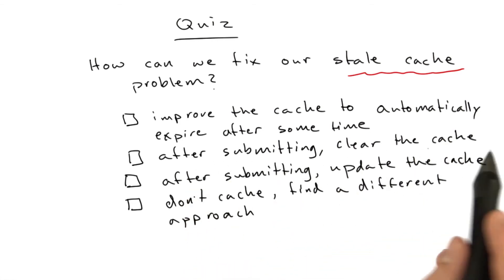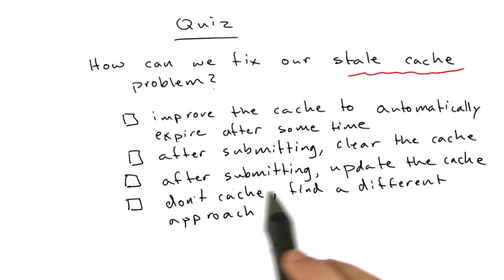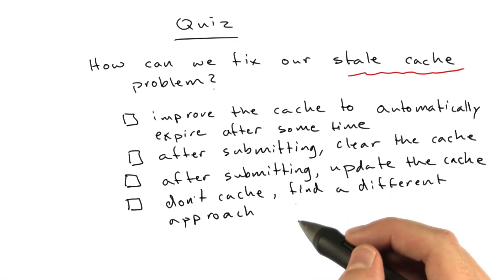Should we improve our cache to automatically expire things after some time? After we submit, should we just clear the cache? Or after we submit, should we update the cache? Or don't cache at all? It's not going to work, and we should find a different solution. There are multiple good answers in here. Check all of them that apply.